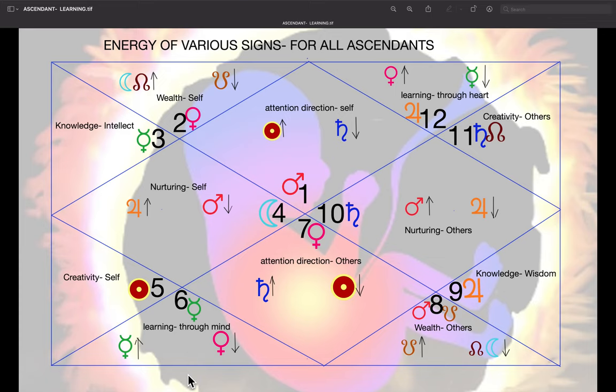Hello people, I want to quickly give you the energy of various signs for all ascendants just before we go into more details in the other podcasts. Here is something you will notice in every sign which is opposite to a sign by the seventh place. For example, this is Aries ascendant.